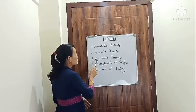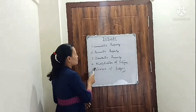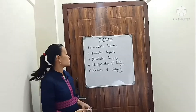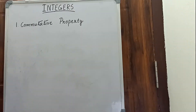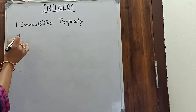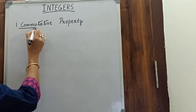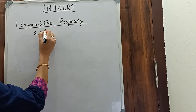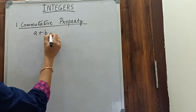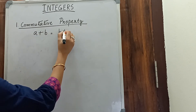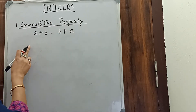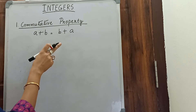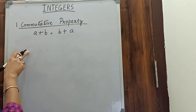Today we will cover the commutative property, associative property, distributive property, and multiplication and division of integers. First is the commutative property. According to the commutative property, a plus b equals b plus a — that means if we reverse the numbers, the answer will be the same.